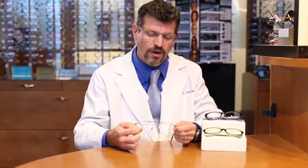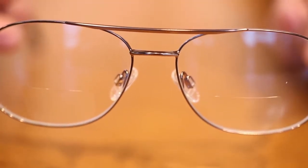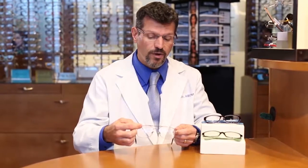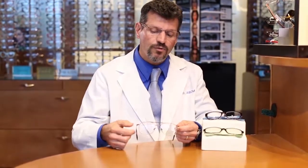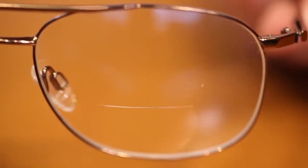You've got for up close this little segment that looks like a D that fell over on its belly, and then for far away you've got the rest of the top of the lens. So if you're used to wearing glasses anyway, this part is like the lenses you've worn all your life, and then this little segment down here allows you to see things up close.